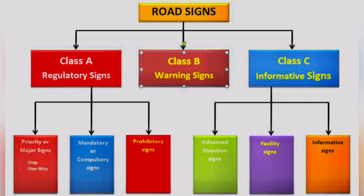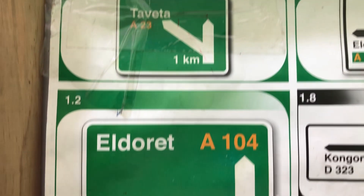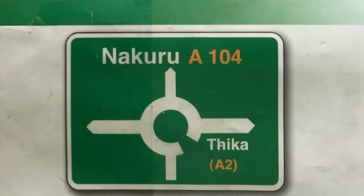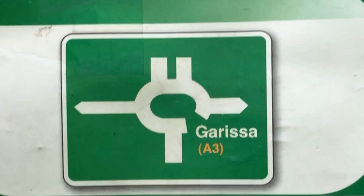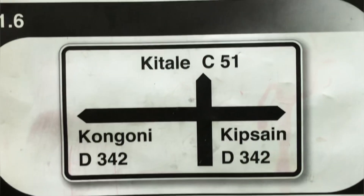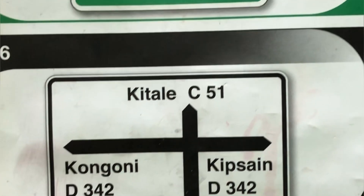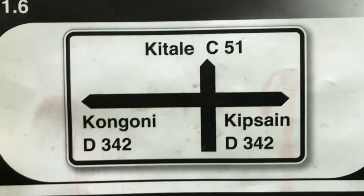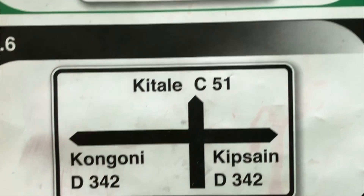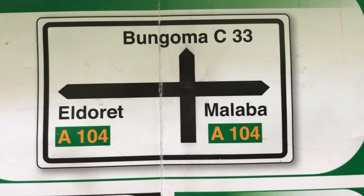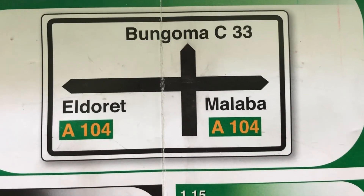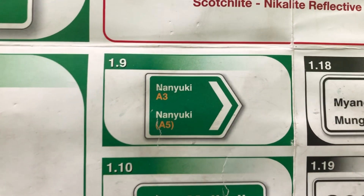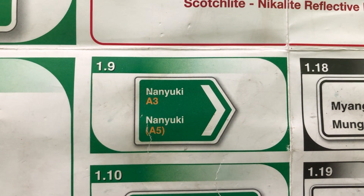Advanced direction signs include: standard advanced direction sign (A104), advanced direction sign for a roundabout junction, and advanced direction sign for a slip road at a grade-separated junction. A non-trunk road connects cities within the same country without crossing borders. A trunk road connects cities and towns in different countries and must have green colors with the letter A. This sign shows a junction between a trunk road and a non-trunk road.